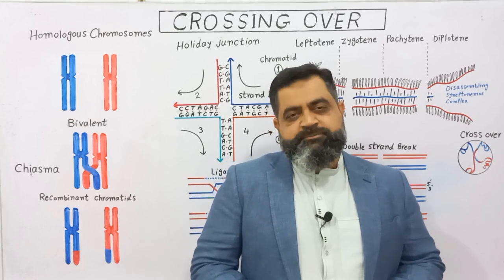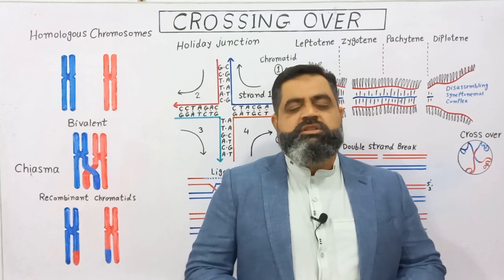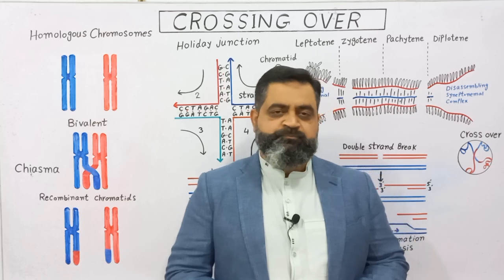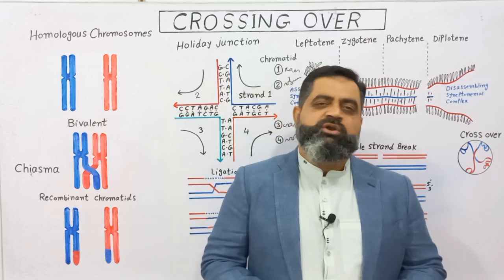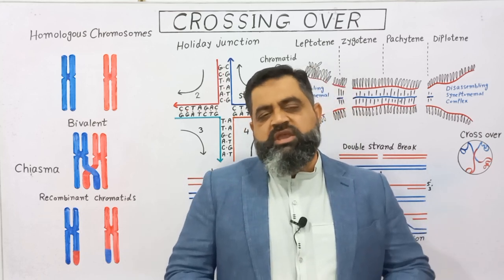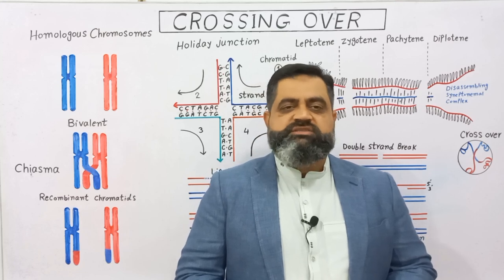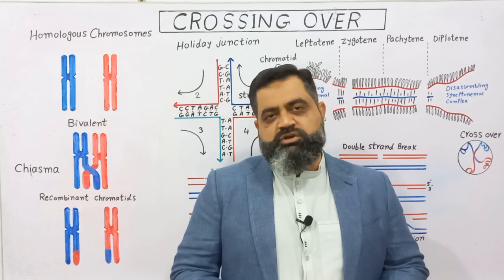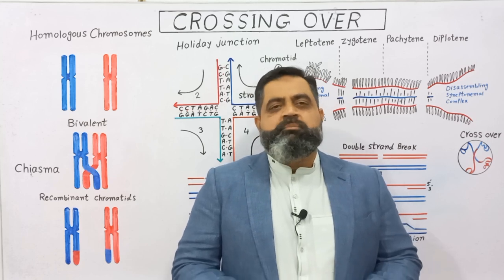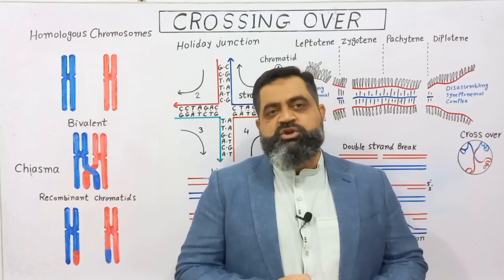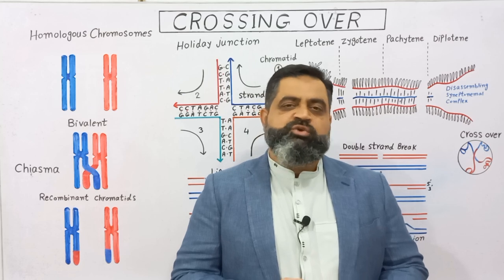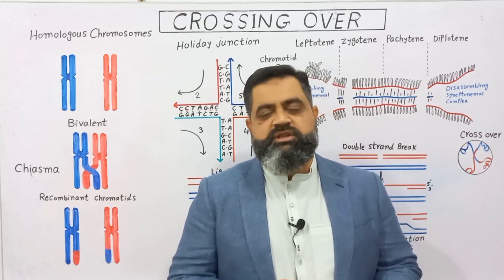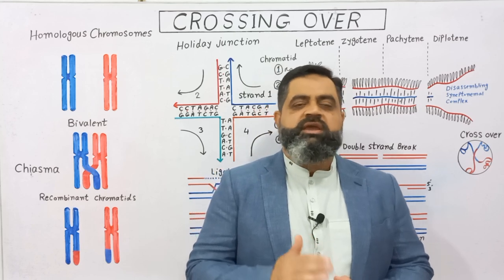Hello to all students. In this video lecture we are going to discuss crossing over. As you know, there are two types of reproduction: asexual reproduction and sexual reproduction. During sexual reproduction, a process known as meiosis takes place during gamete formation — that is, sperm formation and egg formation in male and female respectively.